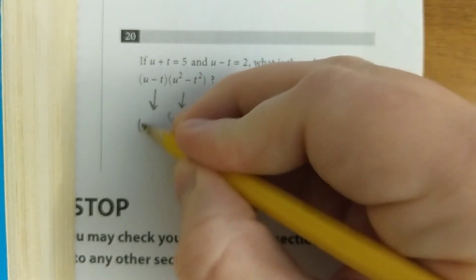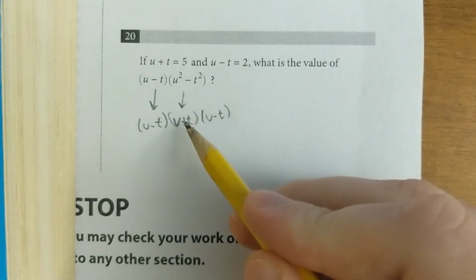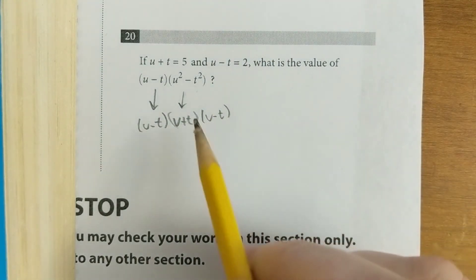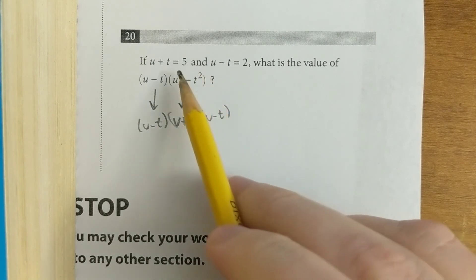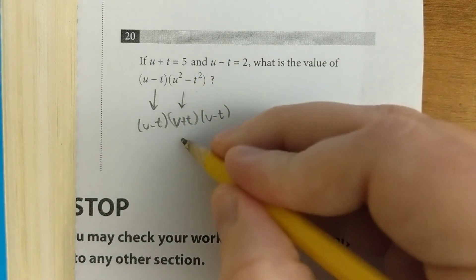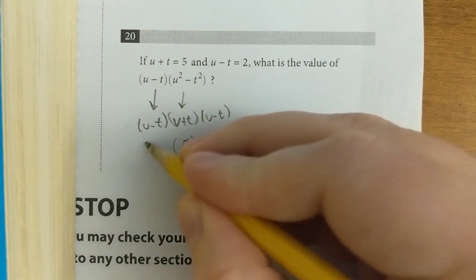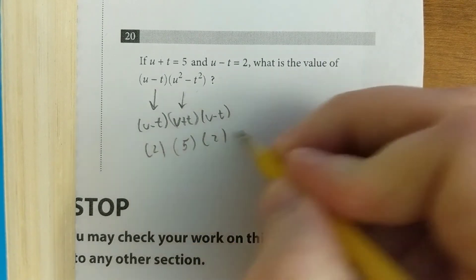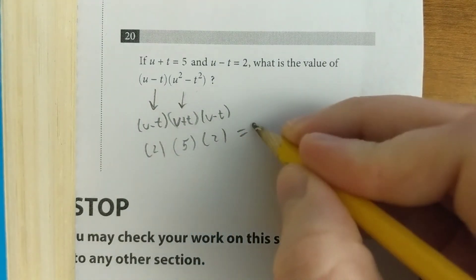So really what this thing is: we have a (u - t) out in front, and then a (u + t) and another (u - t). And then they give you the values for each of these things. So u + t = 5, and u - t = 2. So this whole thing just comes out to 2 × 5 × 2, which is 20.